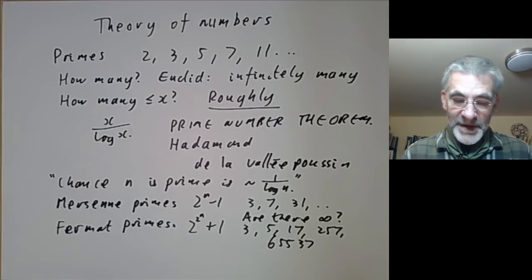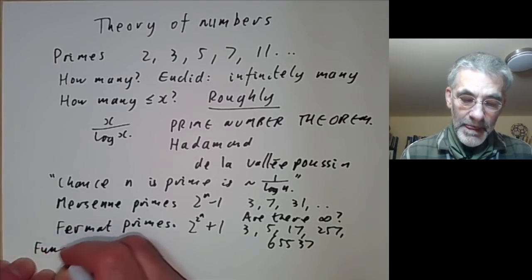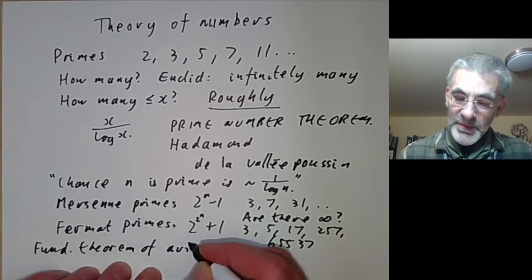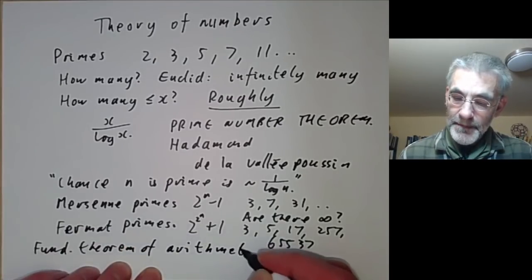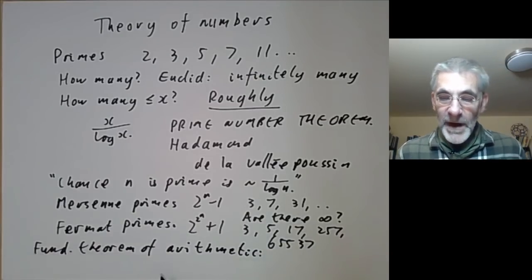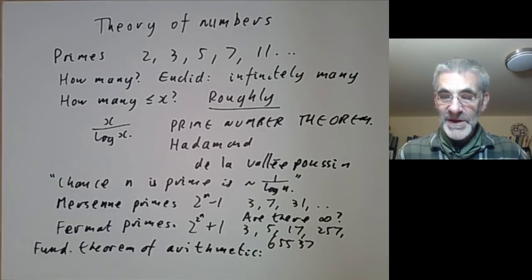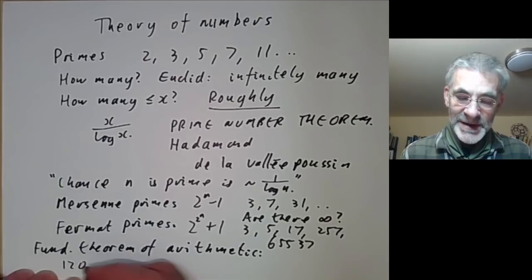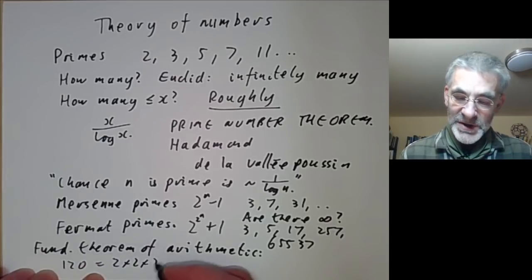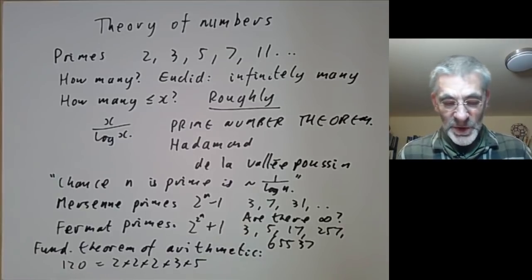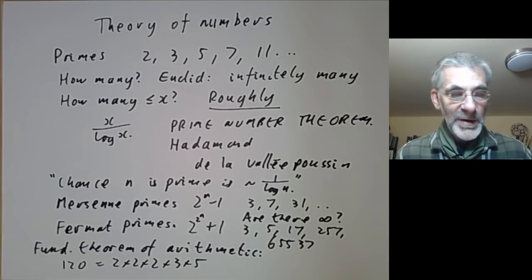Primes also appear in the fundamental theorem of arithmetic, which we will prove later. It states that every positive integer can be written as a product of primes in a unique way, up to order. For instance, 120 equals 2 times 2 times 2 times 3 times 5, and there is no other way to write 120 as a product of primes except by reordering them.